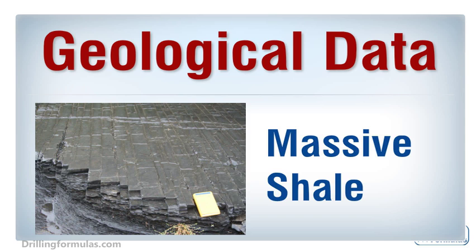Shale is a non-permeable formation, therefore it restricts movement of formation fluid. When overburden formation layers are accumulated over massive shale, shale is compacted and reservoir fluid naturally tries to come out from the pore space. However, shale is impermeable and does not allow pore fluid to come out, therefore formation pressure caused by formation fluid becomes over-pressured.